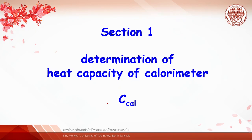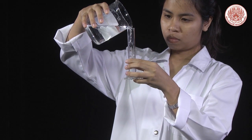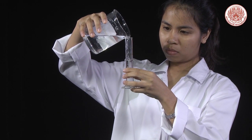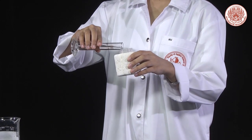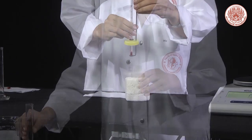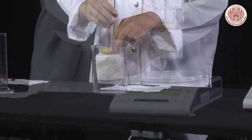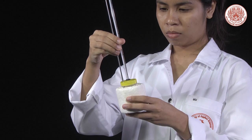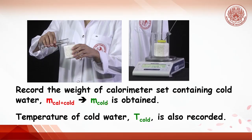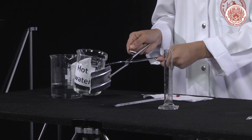Section 1 — Determination of heat capacity of calorimeter. Get 25 ml of tap water as cold water using a graduated cylinder and pour it into the calorimeter, then weigh the calorimeter containing cold water. Also record the temperature of the cold water. Now we have the weight of cold water and the temperature of cold water.